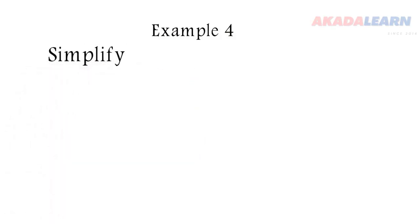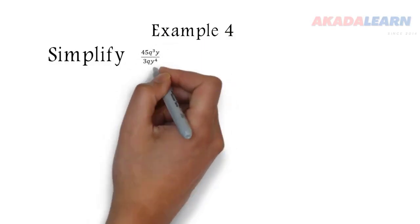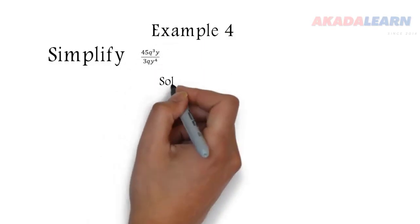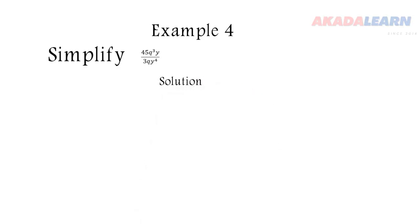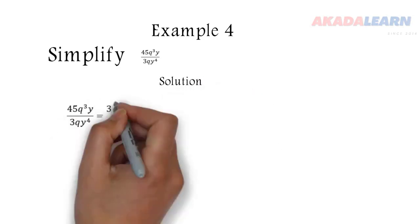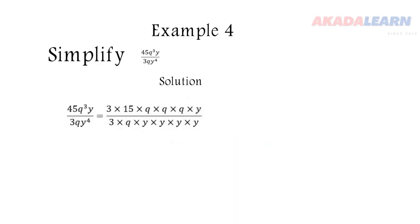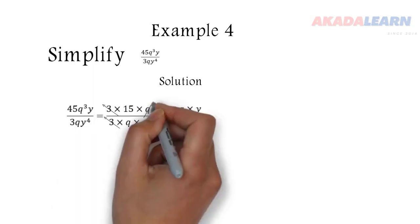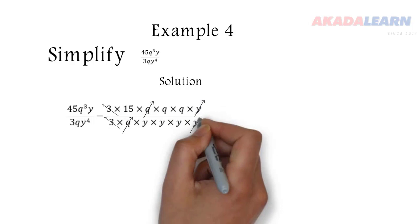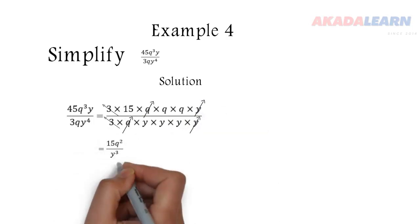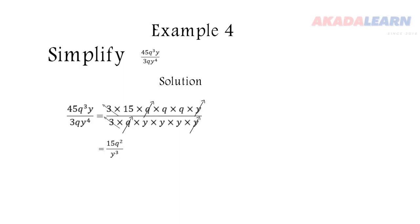Example 4. We are asked to simplify 45Q raised to power 3 times Y, all over 3Q times Y raised to power 4. First we simplify: 45 is 3 times 15. Q raised to power 3 is Q times Q times Q, times Y, all over 3 times Q times Y times Y times Y times Y. So 3 cancels out 3, Q cancels out Q, and Y cancels out Y. So on the numerator we have 15Q squared, and on the denominator we have Y raised to power 3.